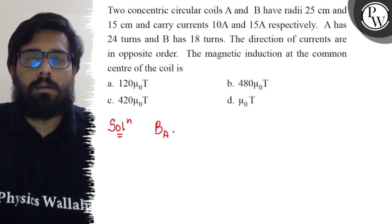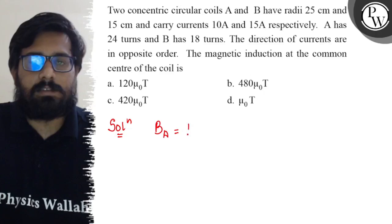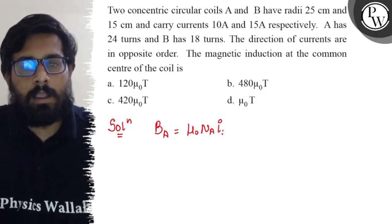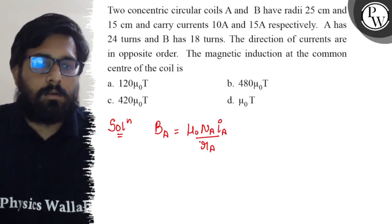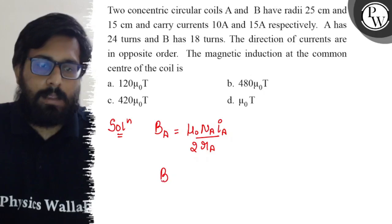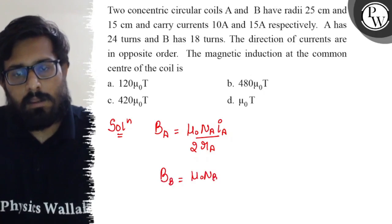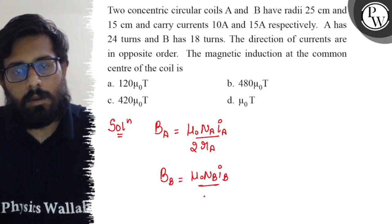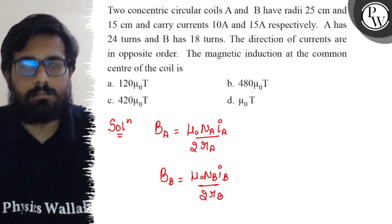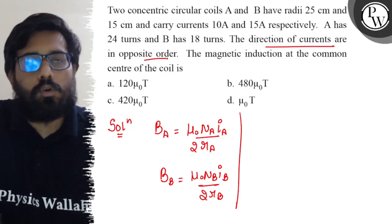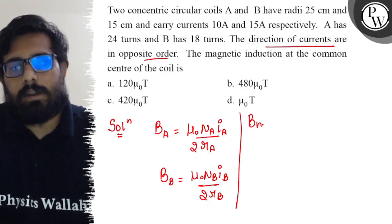So here in this question, for coil A we can write the magnetic field at the center as mu naught n_A i_A upon 2 r_A. For coil B this can be written as mu naught n_B i_B upon 2 times r_B.